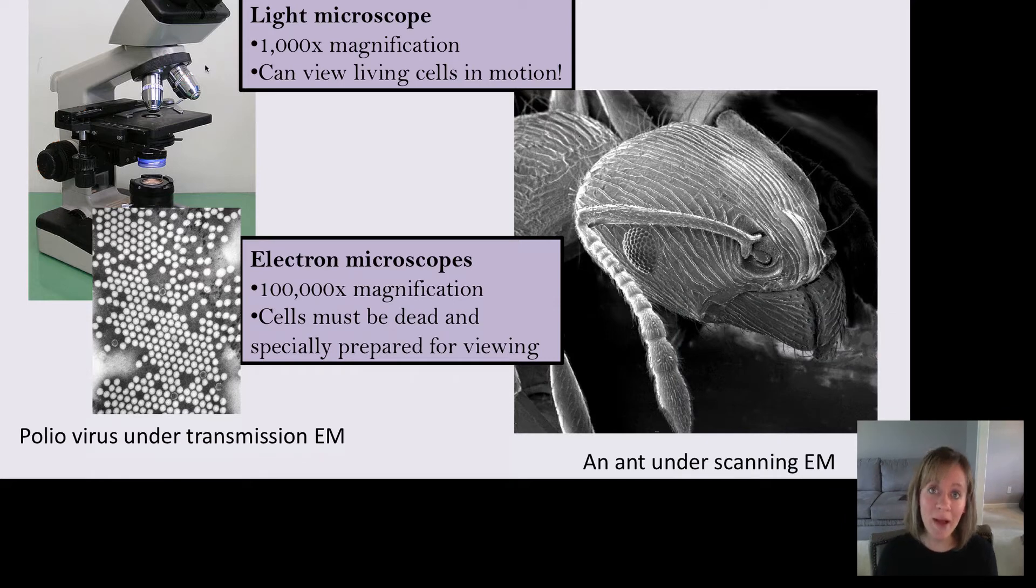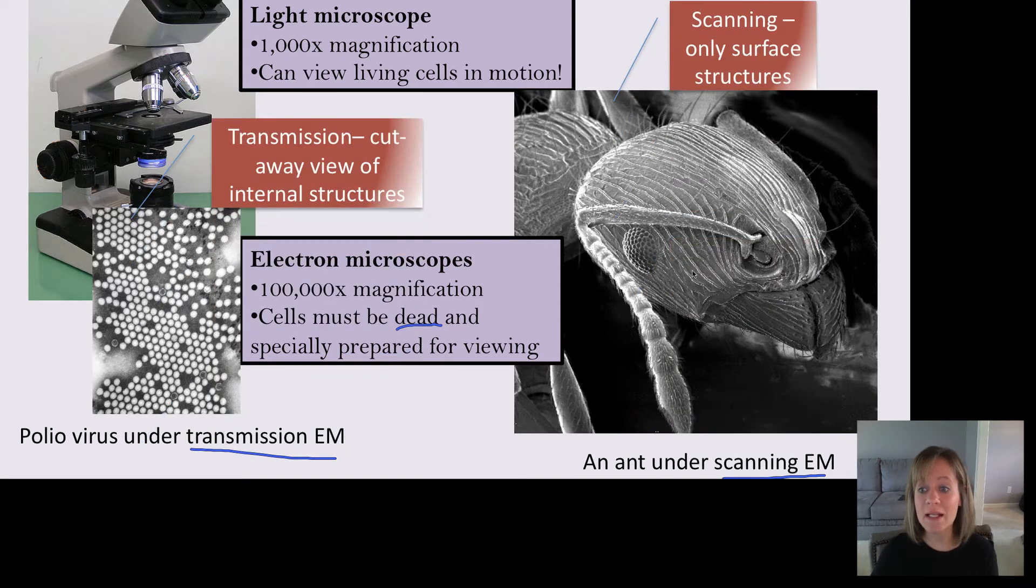The other type is called an electron microscope, and this is very expensive, a very nice microscope. We don't have one in the lab, but hopefully we'll be able to take a field trip sometime and see one. You can go up to a hundred thousand times magnification. However, the drawback for electron microscopes is that cells must be dead and specially prepared in order to view them. So here's an ant under a scanning electron microscope. Here's a poliovirus under a transmission electron microscope. Now there are differences between these microscopes. A scanning electron microscope only is looking at the surface of the structure. So we're just seeing the surface of the ant. A transmission is actually a cutaway, and you can view internal structure. So picture maybe a big fruit and nut bread, a loaf of bread. If you cut away, you can see inside the bread and see all the raisins and the nuts in there. That's what a transmission electron microscope does.